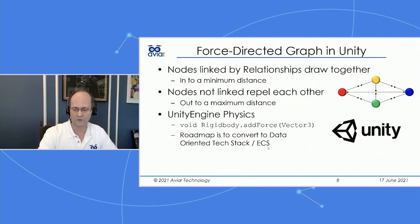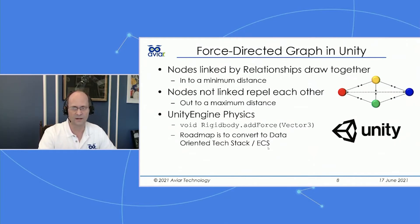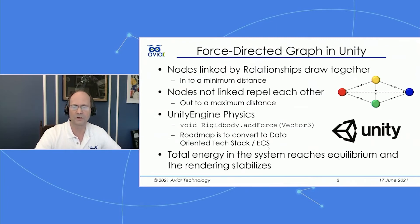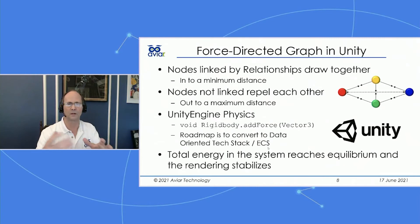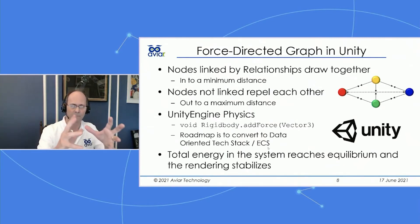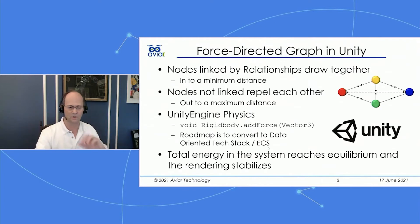If you've built within Unity you're somewhat familiar with this. I have a roadmap to improve the physics and behavior using Unity's Data Oriented Tech Stack, which will improve performance and enable rendering of more nodes. At some point the total energy in the system reaches an equilibrium and the rendering stabilizes. When the rendering first appears in front of you, it springs into place as nodes push each other away. All of the energy stabilizes and the array in front of you takes shape in three dimensions all around you.